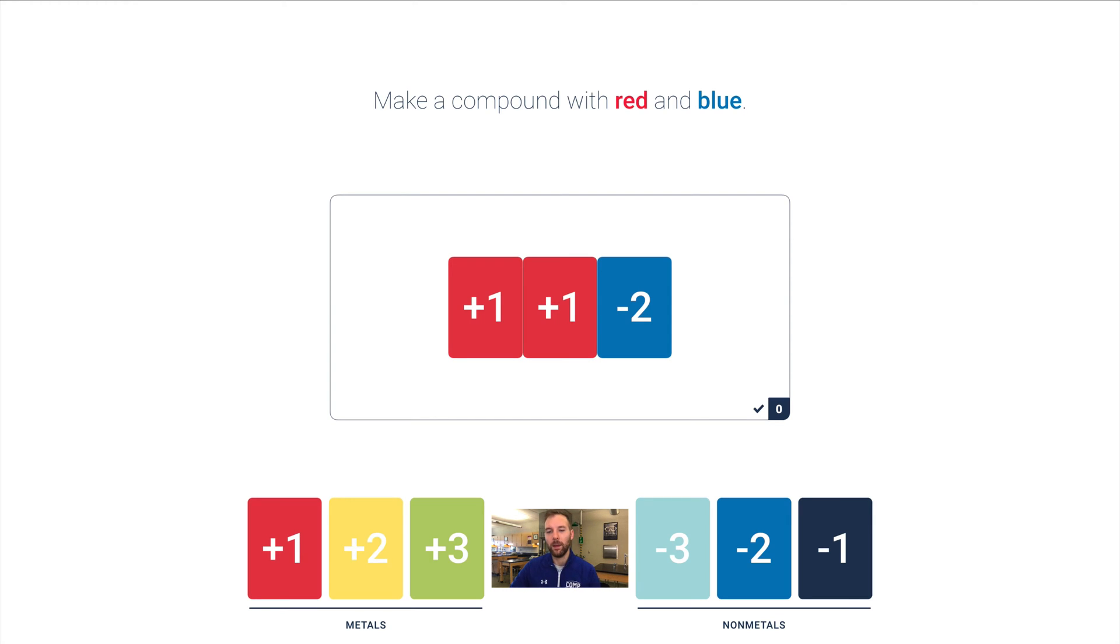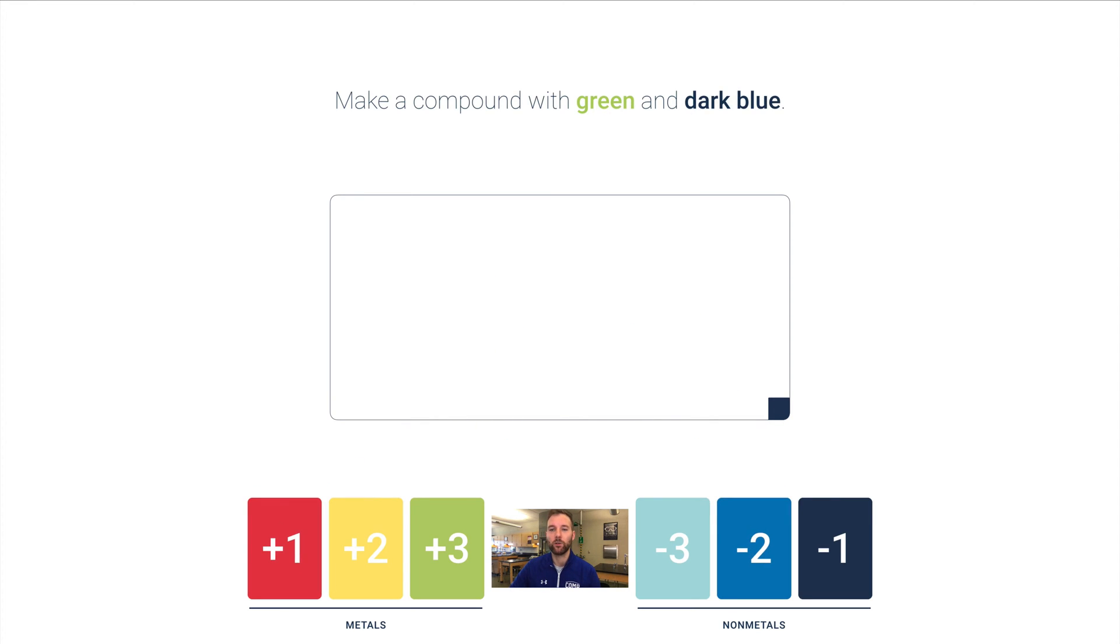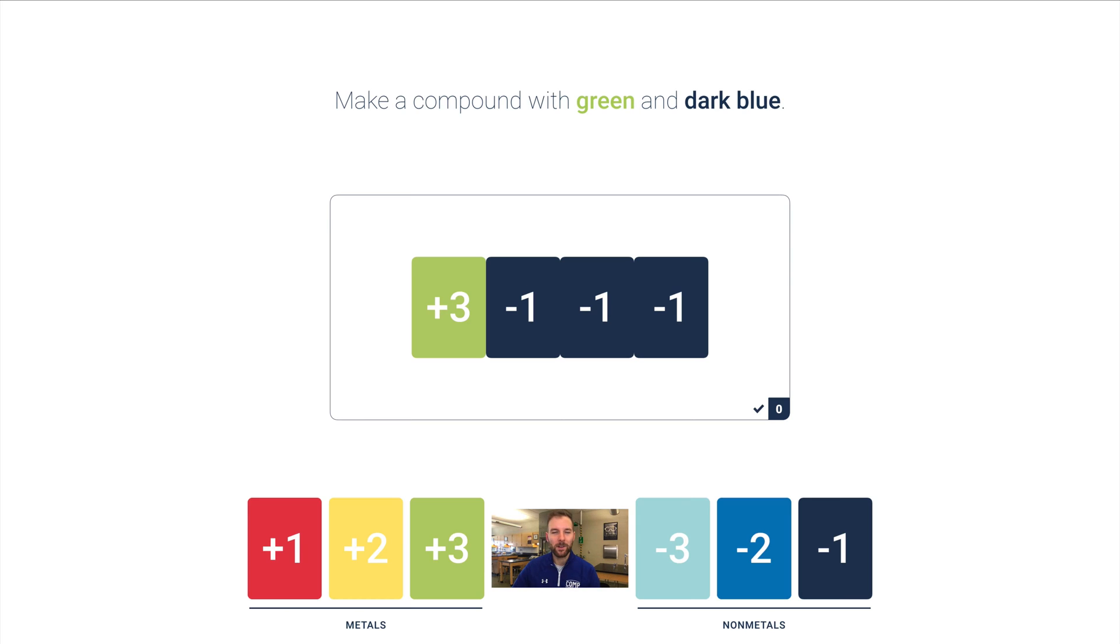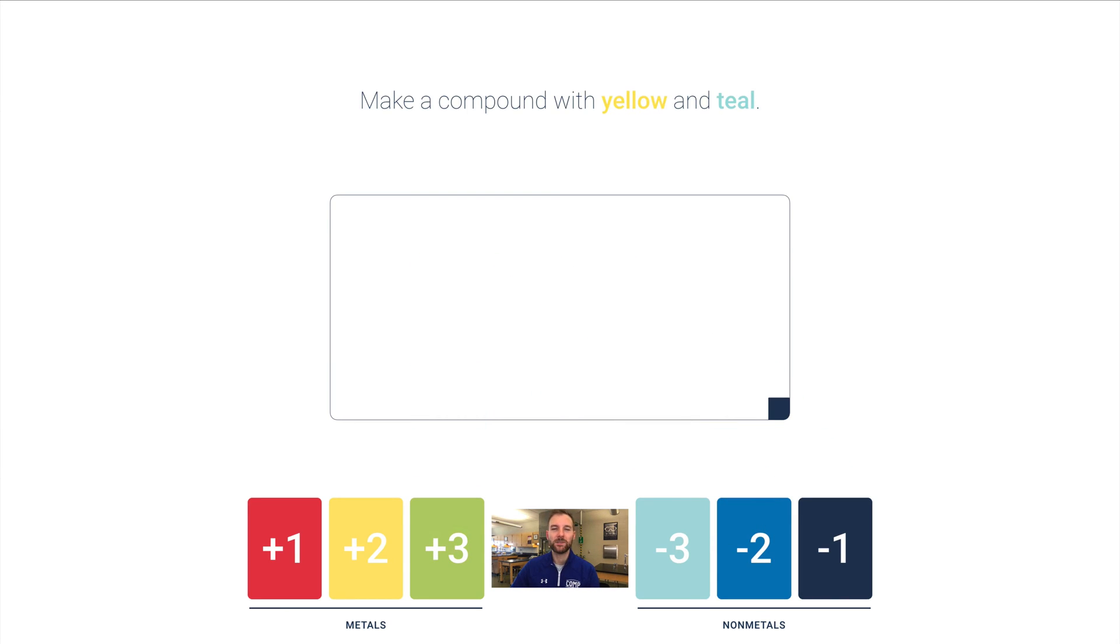Let's try green and dark blue. Here's green, that's plus three. I bring in a dark blue. One of each would give me a plus two charge overall, so I need to keep adding dark blues until I get down to zero. Notice I have one plus three and three minus ones.